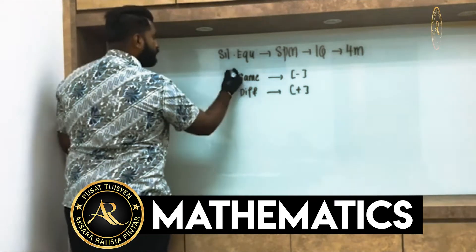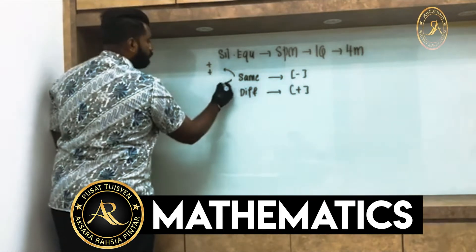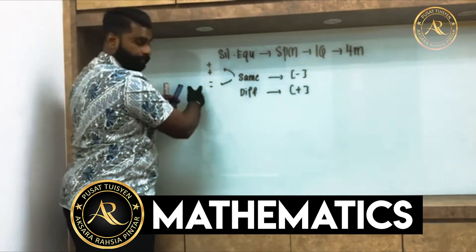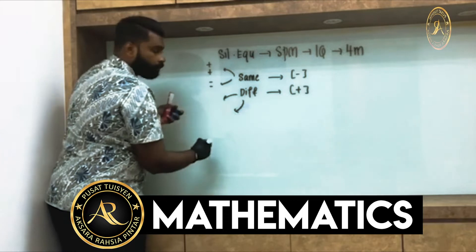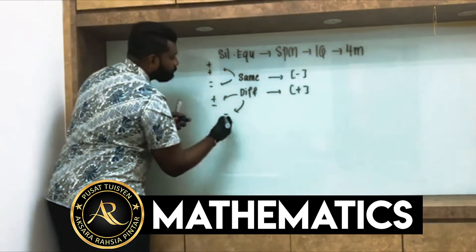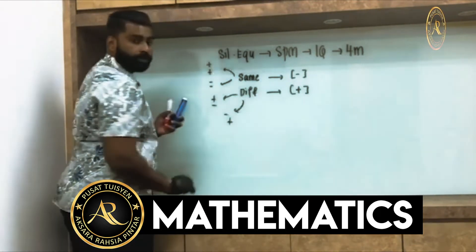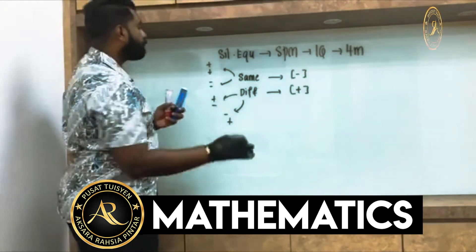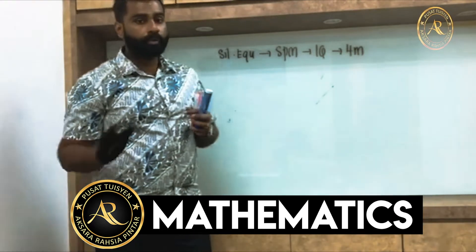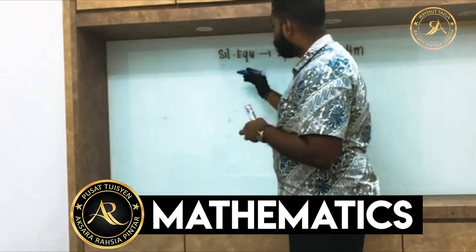Same means you will see positive and positive, or negative and negative — that is same. Different means one will be plus and one will be minus. When different, we do plus; when same, we do minus. Memorize this: same → minus, different → plus.